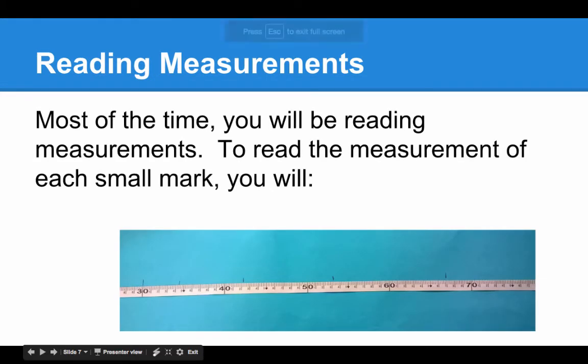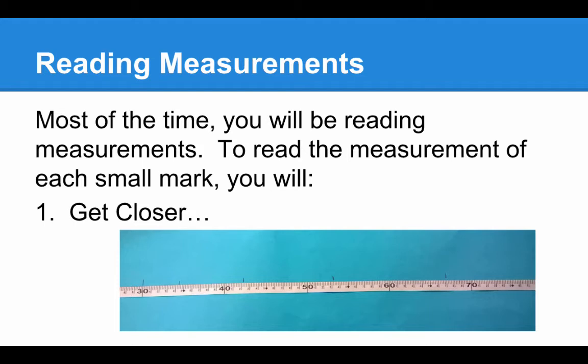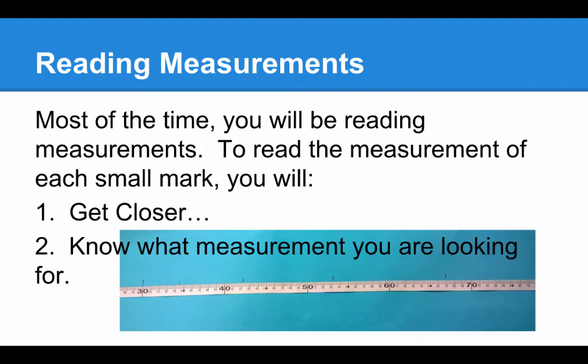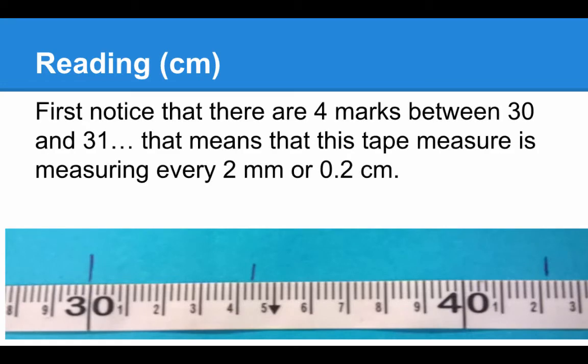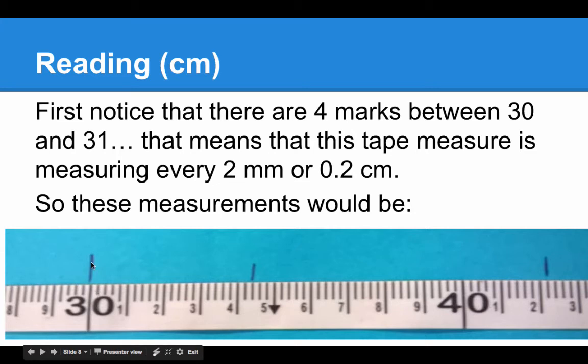So most of the time, you're going to be reading measurements off of a ruler, rather than just telling how long one segment is. Here's what you need to do. One, you've got to get really close to it in order to be able to see it. And two, you've got to know what measurement you're looking for. If you look at this ruler, you're going to notice that you're looking at the centimeter side of a measuring tape. So we got to get closer. First notice that there are four marks between 30 and 31. That means that this tape measure is counting every two millimeters, or 0.2 centimeters. So these measurements, where the blue marks are on the blue paper, would be at 30, 34.4, and 42.2.